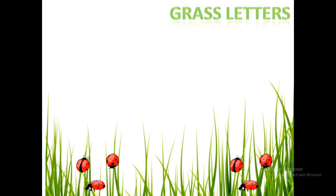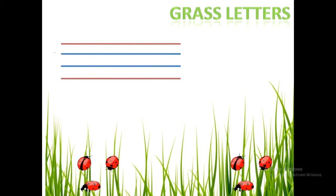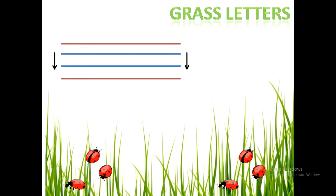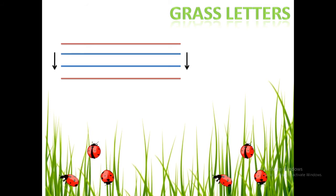Next are grass letters. Let's see the place and position of grass letters. They are written in the two middle lines, which means they include the two blue lines. They begin at the first blue line and end on the second blue line. These letters don't touch the top and bottom red lines.